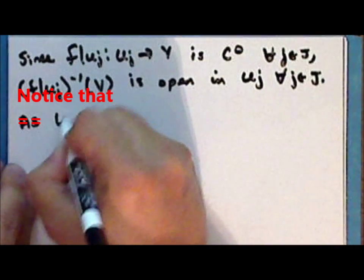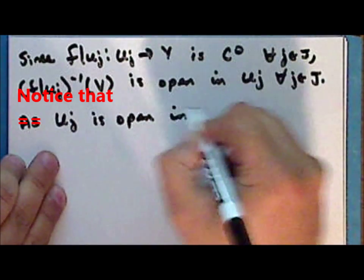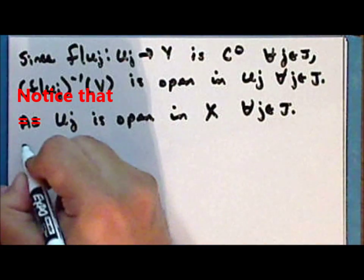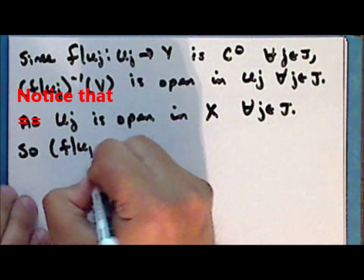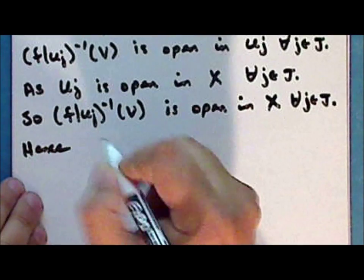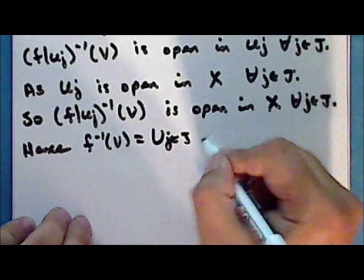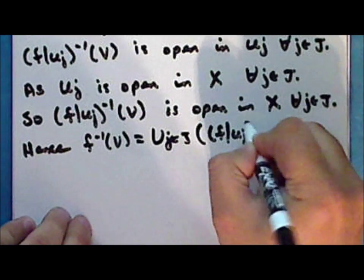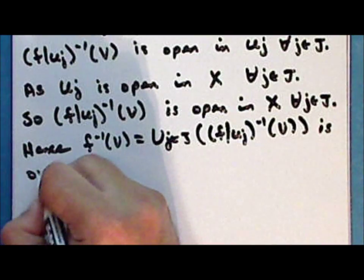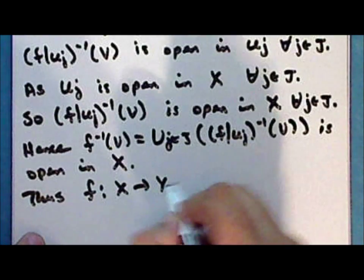Since the restricted function is continuous for every index j, and since each U-sub-j is an open subspace of X, the inverse image under the restricted map of V is open in X for every index j. Hence the inverse image of V under F, being a union of open sets in the space X, is open in X, and thus the function F mapping X into Y is continuous.